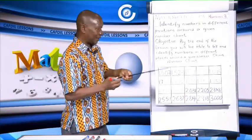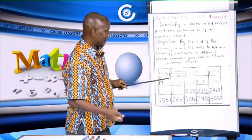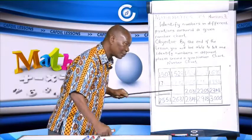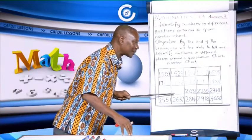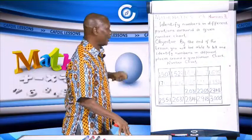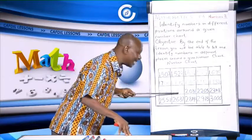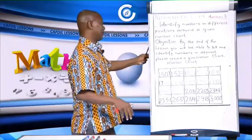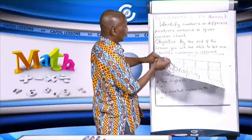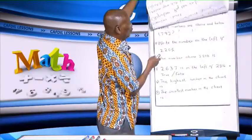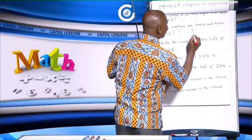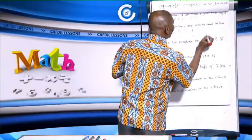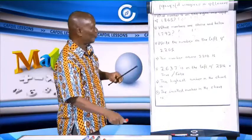Let's check the number below 1,792. The answer is 2,016 — two thousand and sixteen. That is the number below it.